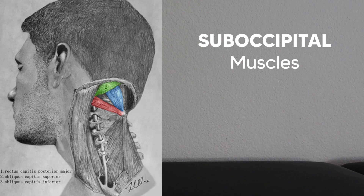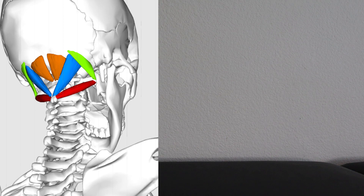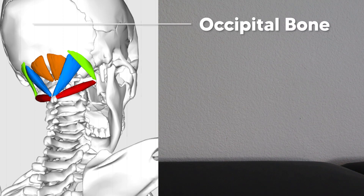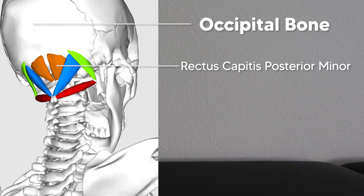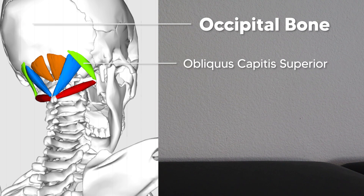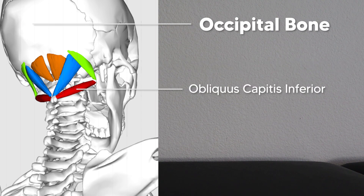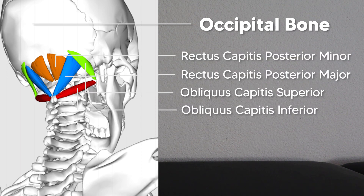Here's a quick video on how to remember the suboccipital muscles. The suboccipitals are found deep in the posterior neck, inferior to the occipital bone. There are four muscles here on each side: the rectus capitis posterior major, the rectus capitis posterior minor, the obliquus capitis superior, and the obliquus capitis inferior. These names are terrible, but I'm going to show you how to remember all these muscles and especially their origins and insertions.